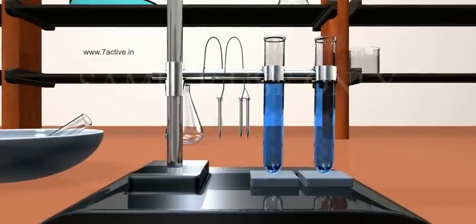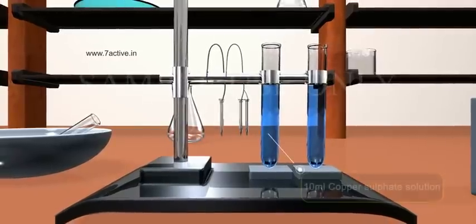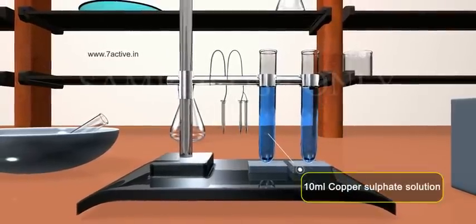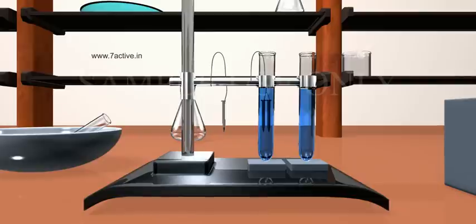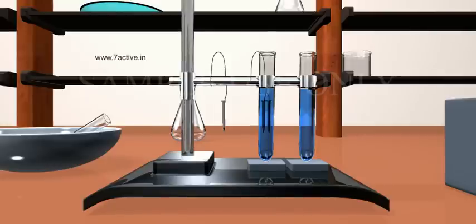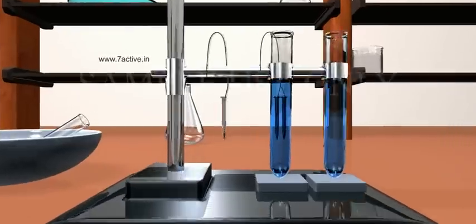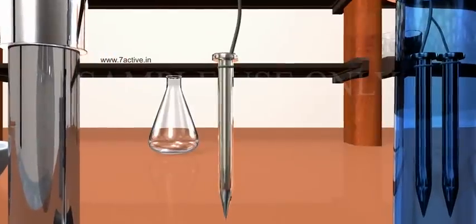In each test tube, take 10 ml copper sulfate solution. Tie two iron nails with a thread and immerse carefully in the copper sulfate solution in test tube B for about 20 minutes. Keep one iron nail aside for comparison.